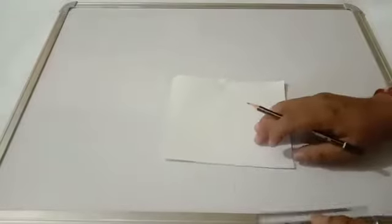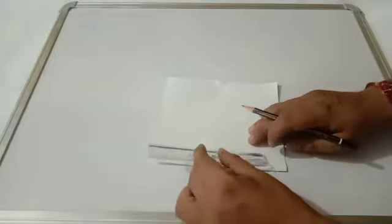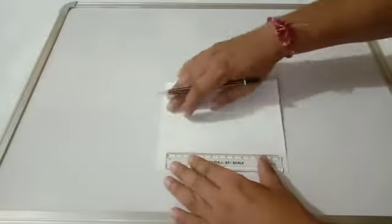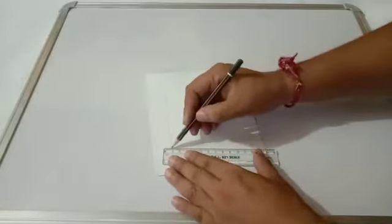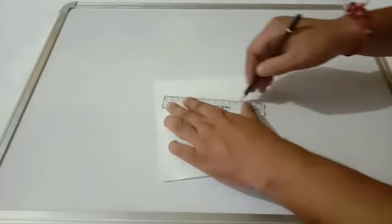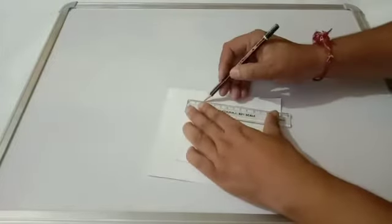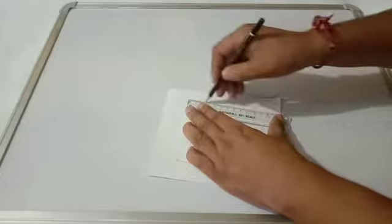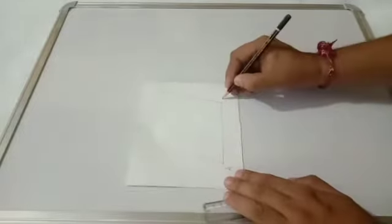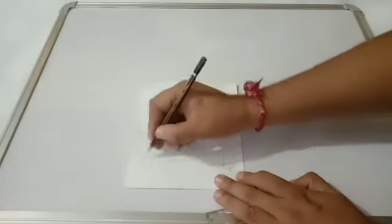So students, let's start the activity. First, with the help of pencil and scale, we draw a quadrilateral. You can draw a quadrilateral of any dimension. I am drawing a quadrilateral on this chart paper. We have drawn quadrilateral ABCD.